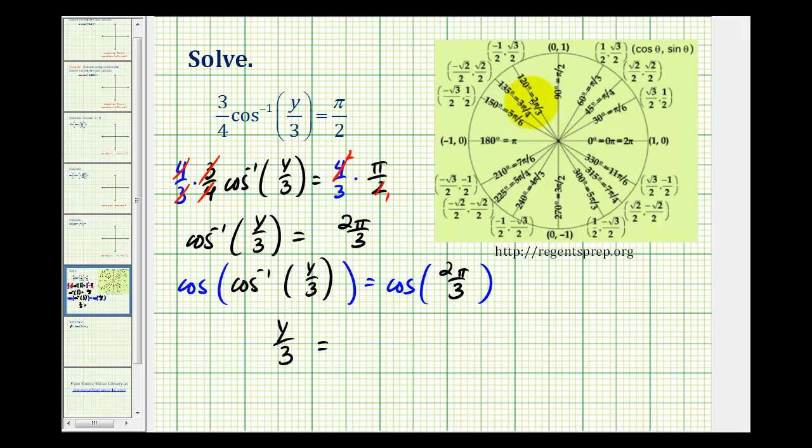Well, using the unit circle, here's two pi over three, so the cosine function value would be equal to negative one-half.